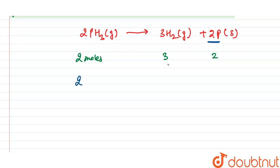Because according to Avogadro's law, volume of gas is directly proportional to number of moles. So from here we can say one volume of PH3 gives 3/2 volume of H2.